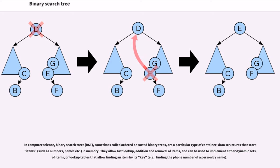Binary search tree in computer science, binary search trees (BST), sometimes called ordered or sorted binary trees, are a particular type of container data structures that store items such as numbers, names, etc. in memory. They allow fast lookup, addition, and removal of items and can be used to implement either dynamic sets of items or lookup tables.